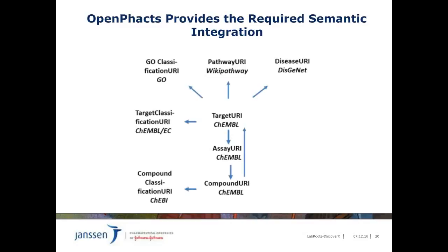Such annotation capabilities are made possible by the semantic integration among key data concepts integrated in OpenFacts. Using the ChEMBL data, known compound-target interactions are identified. The compound data is directly linked to compound classification data in ChEMBL, and the target data is directly linked to GO, pathway, and disease data and the ChEMBL target classification.